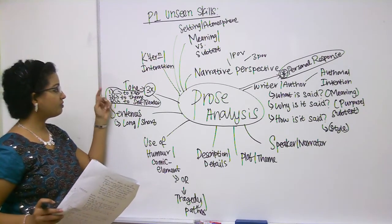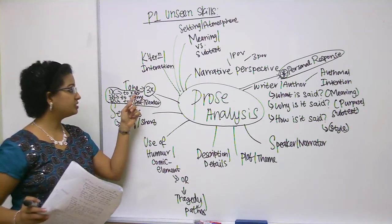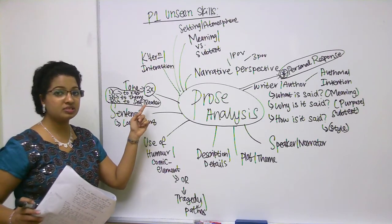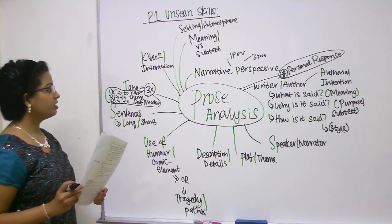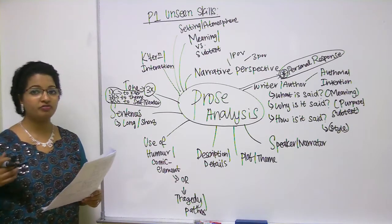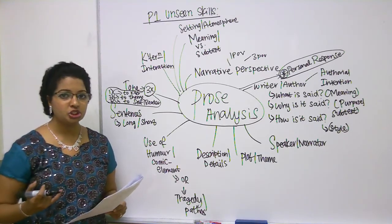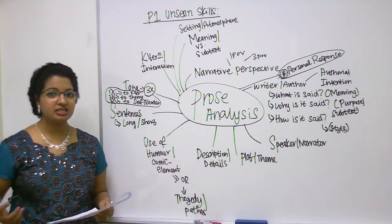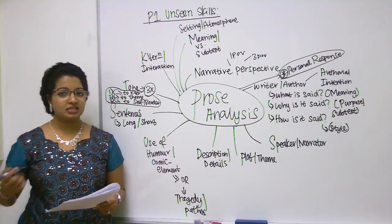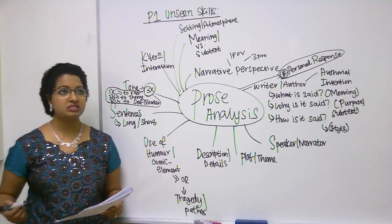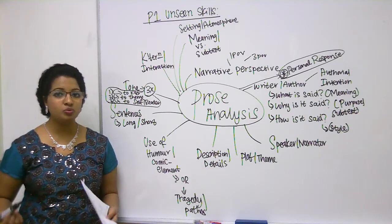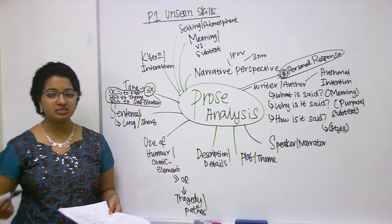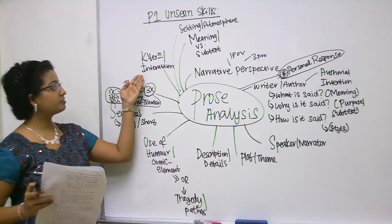Now ask yourself: what is the writer's attitude towards the character, towards the theme, and towards himself or herself and the reader? In this case, you have to look at the biography of the writer — his or her age, gender, social class, political affiliation, nationality, ethnicity, even sexuality. How does the writer's biography influence his or her purpose in writing on that subject matter?